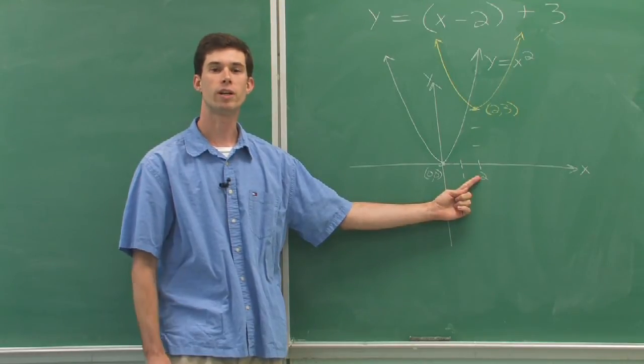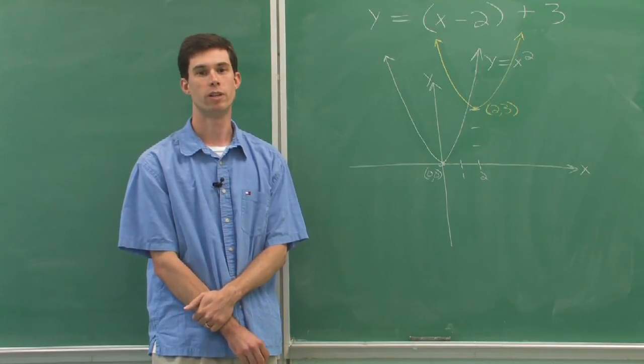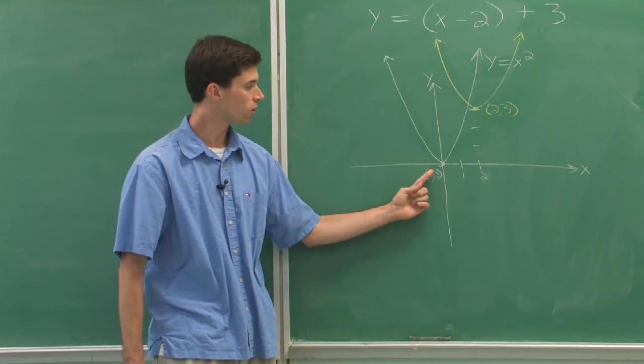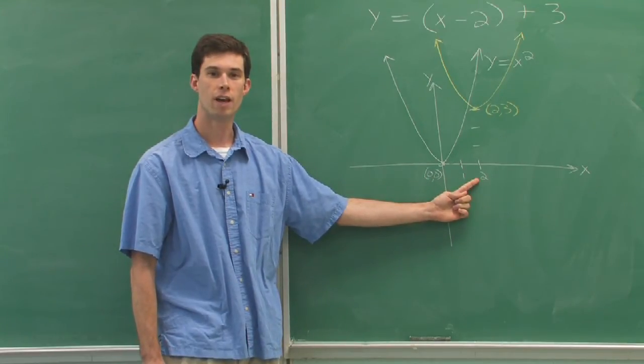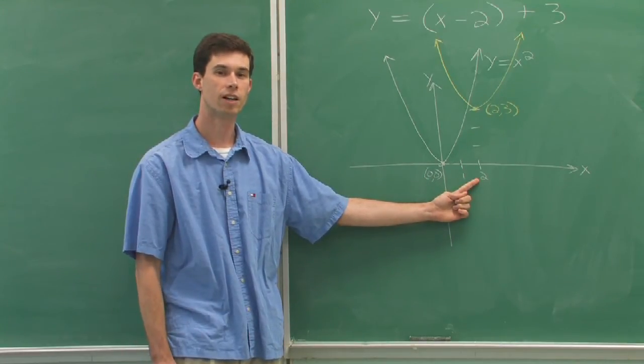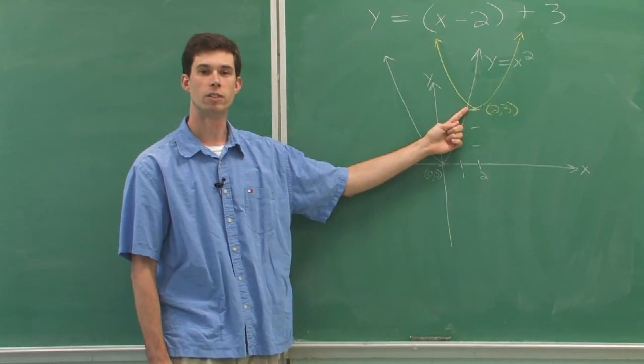And then the plus 3 on the outside tells us that we're going to move the graph upwards of 3 units. So then we would take our vertex, move it to the right 2 for the horizontal translation. And because the plus 3 is on the outside, we would move the graph up 3 units for the vertical translation.